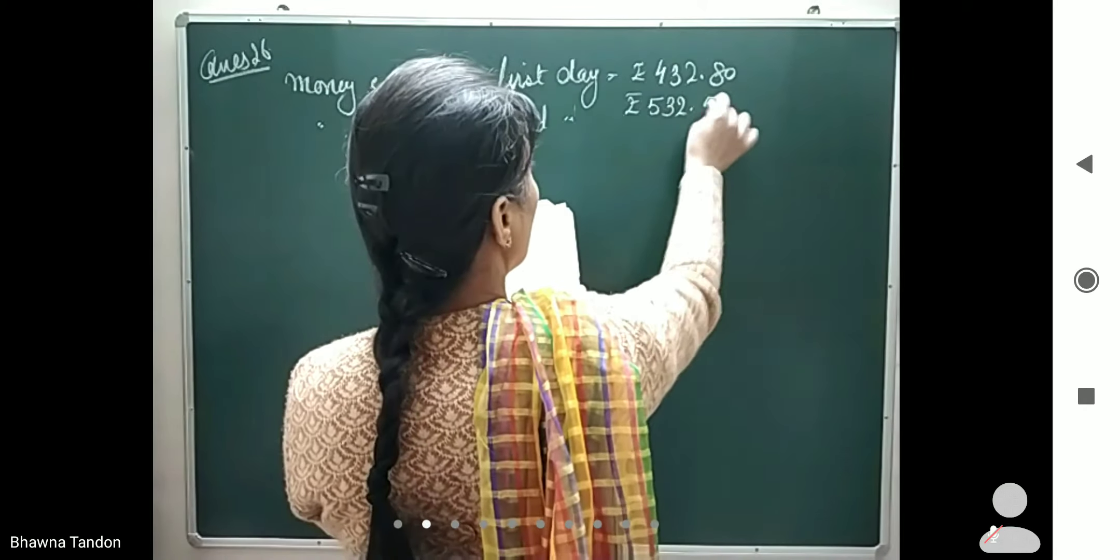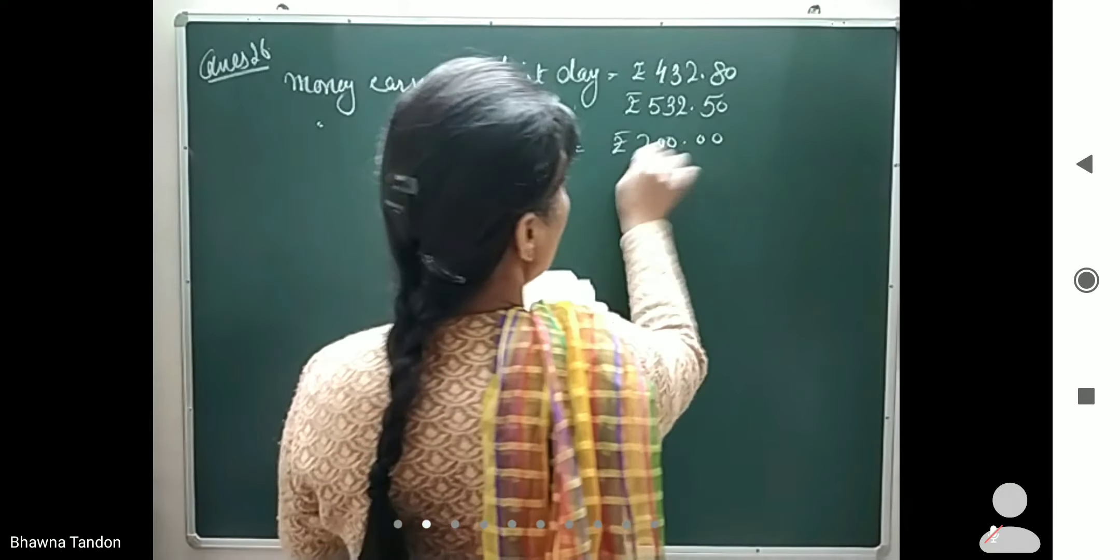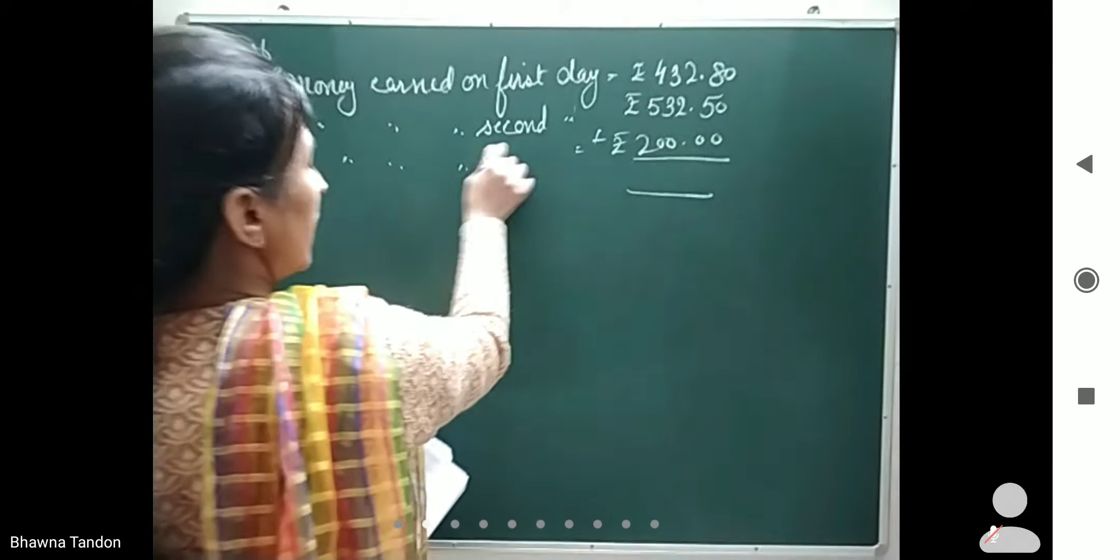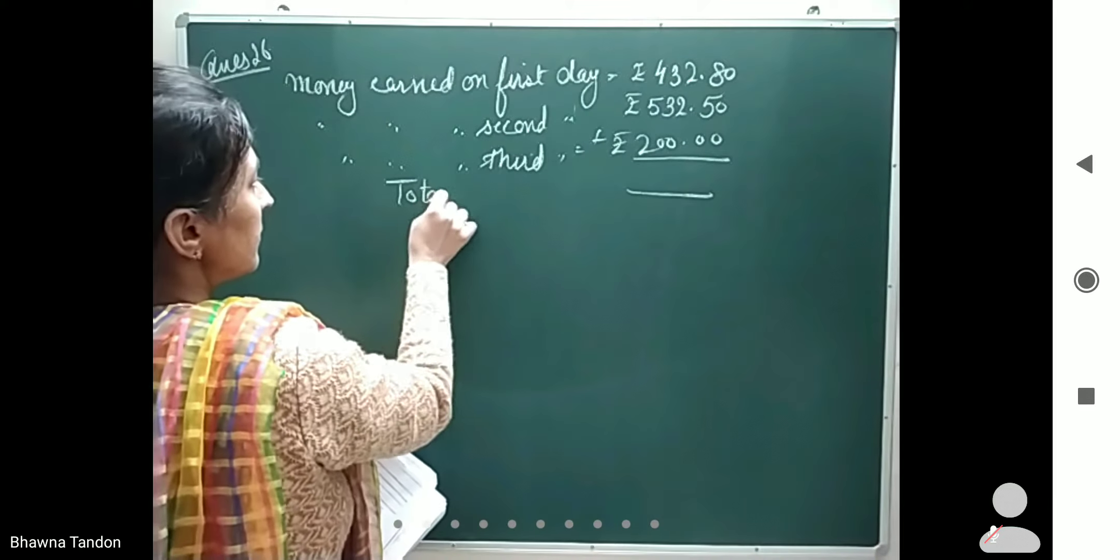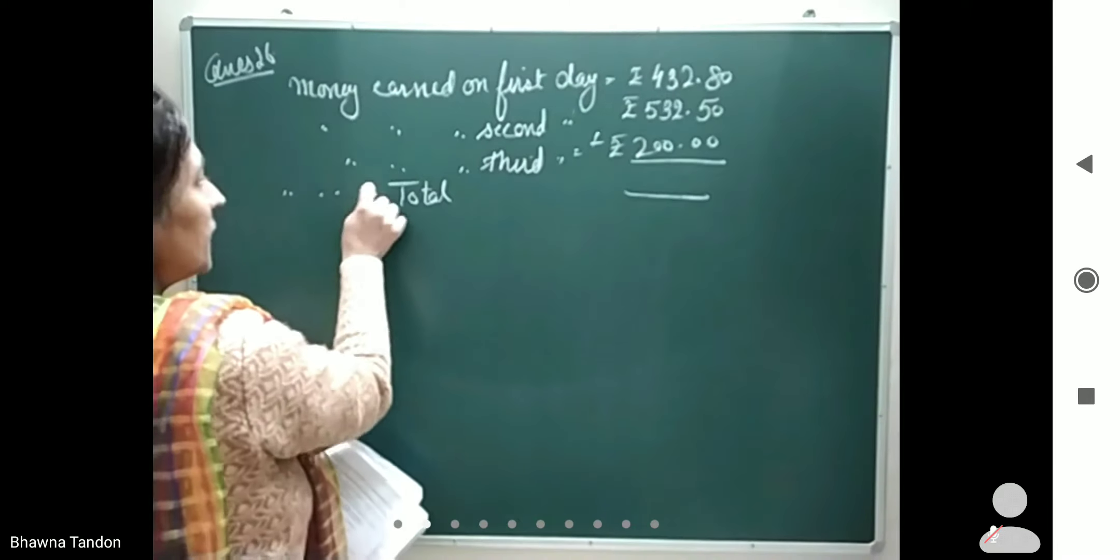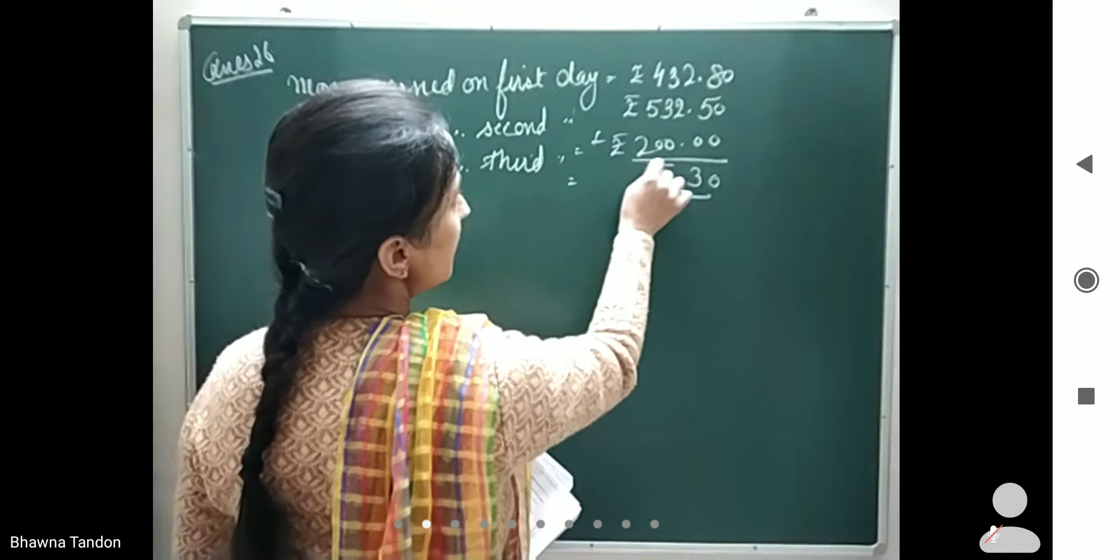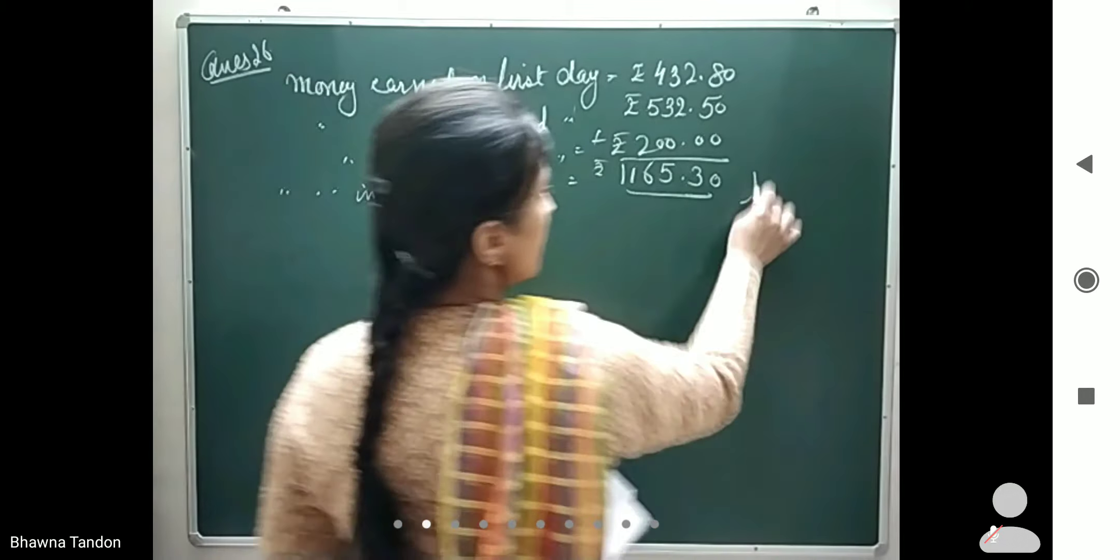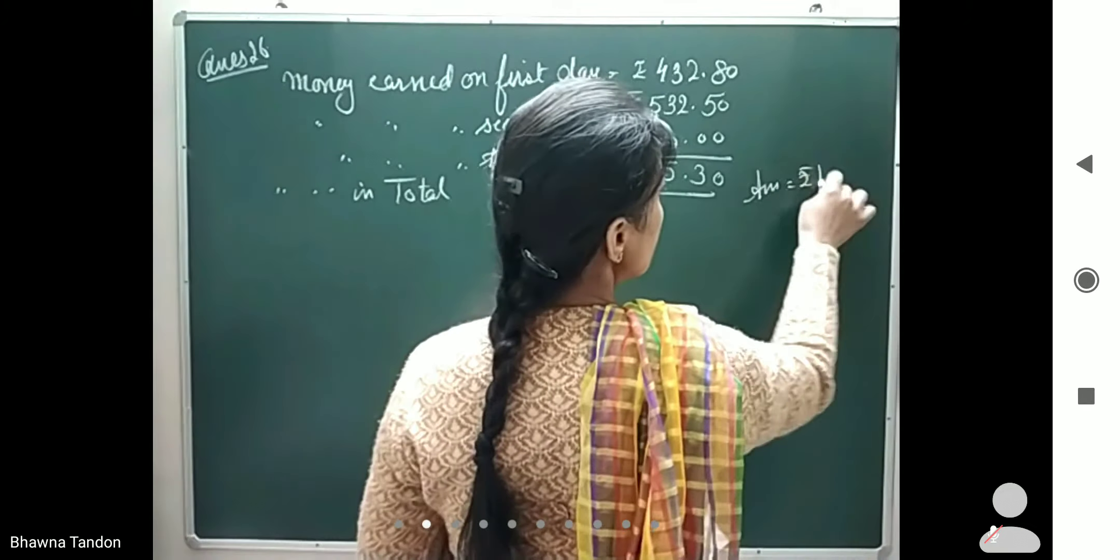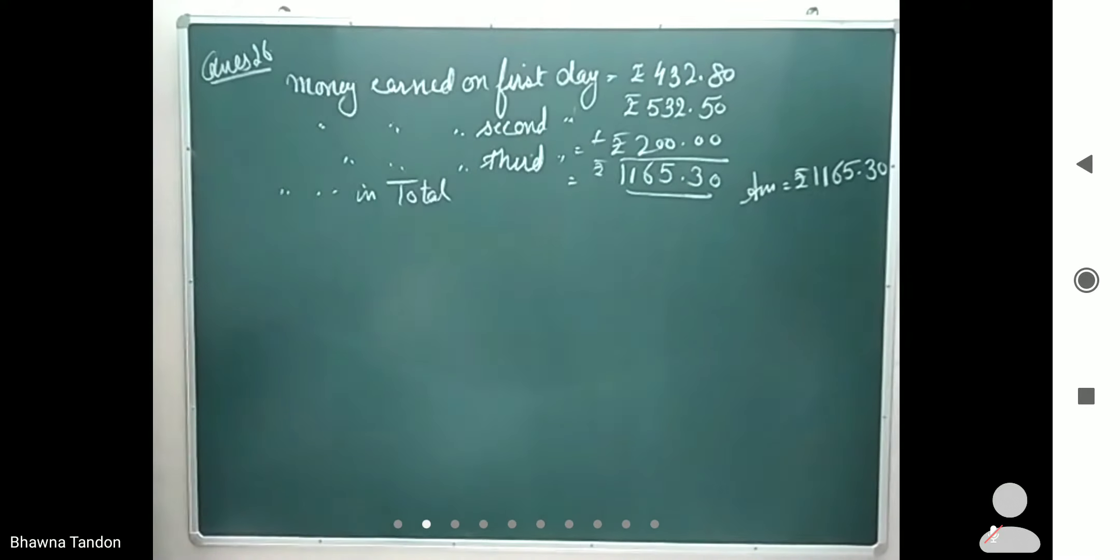And on third day he earned 200 rupees. Then total money earned: when I add, it will be 0, 3, 1, 5, 6, and 11. That means he earned rupees 1165.30. This is question number 26.